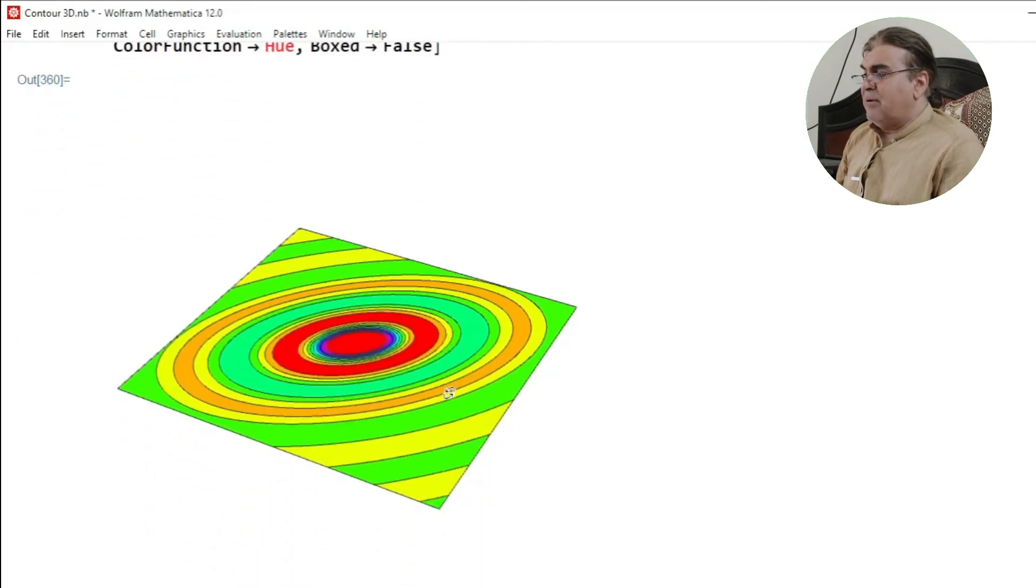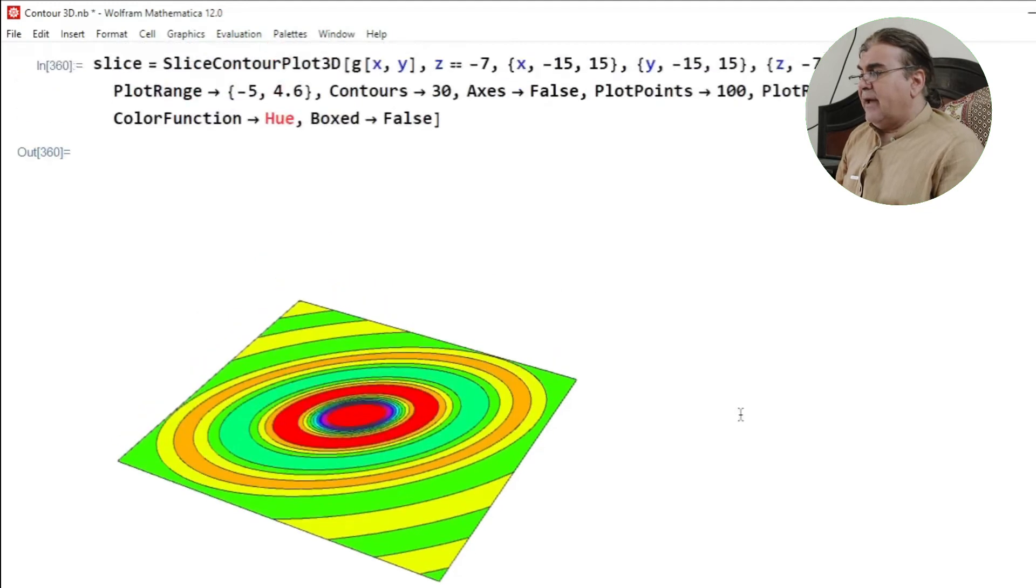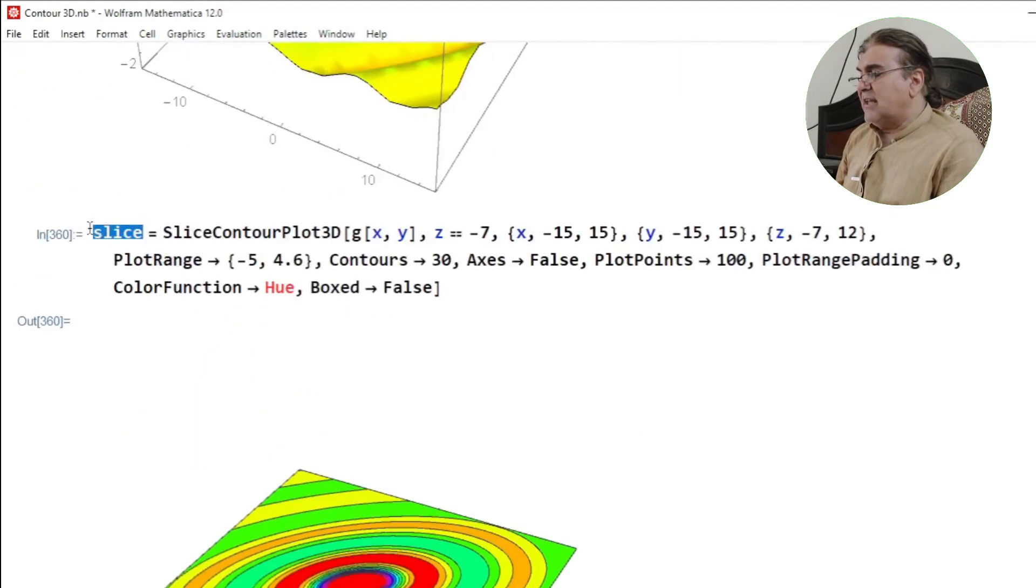I get this surface plot without any axis, any box, and I assign this value to slice.